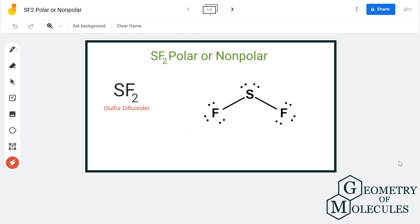When you look at its Lewis structure, you can see that sulfur atom is forming a single bond with both the fluorine atoms, and there are two lone pairs of electrons on this atom. Here is the molecular geometry of the molecule.